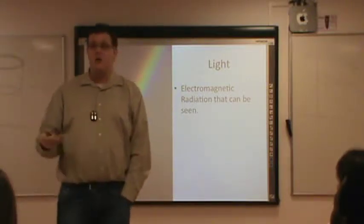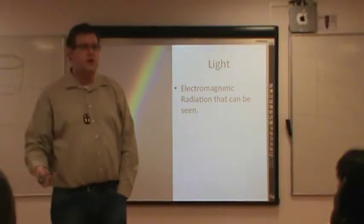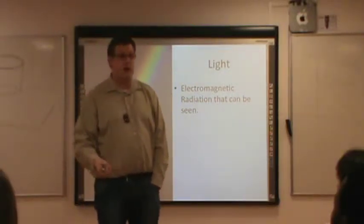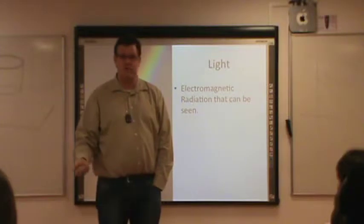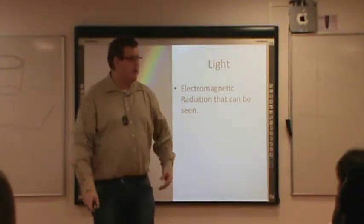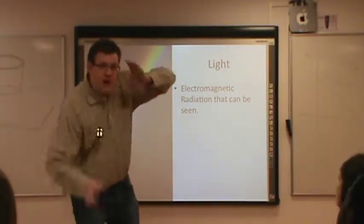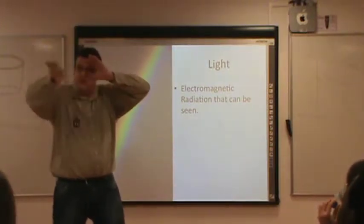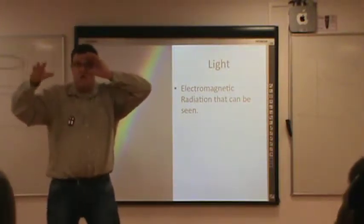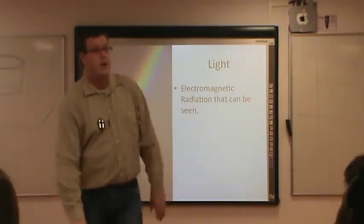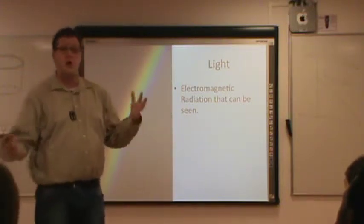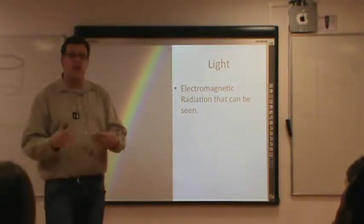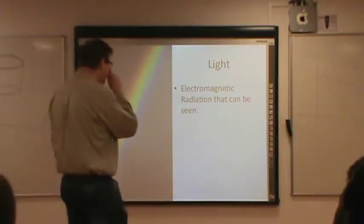There are other types of electromagnetic radiation that we can't see, like infrared. Do you guys know what infrared light is? Like in sky cameras — it's really dark outside, but they can still see what's going on because they're using infrared electromagnetic radiation. We're not sensitive to this, but we can be with technology.